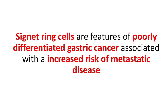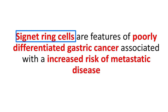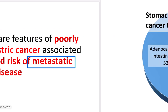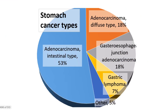We have to keep in mind that signet ring cells are a special type of cell — they are poorly differentiated gastric cancer cells and are associated with a high risk of metastatic disease. When signet ring cells are present, there is early metastasis usually via lymph nodes, and these carry a poor prognosis.